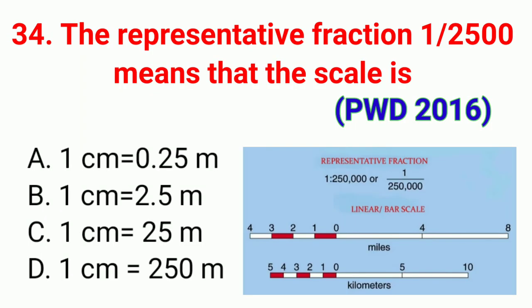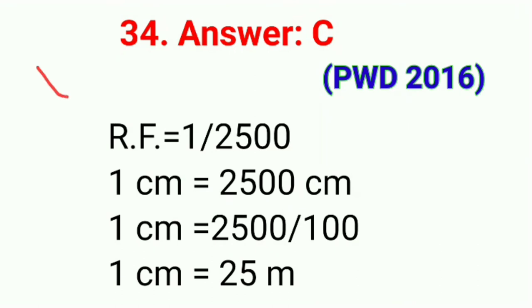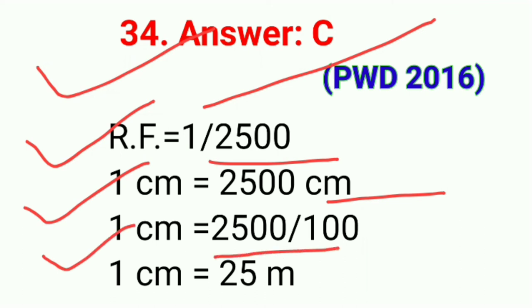Question number thirty-four: The representative fraction 1/2500 means the scale is. The correct answer is option C, 1 centimeter equals 25 meters. RF = 1/2500 means 1 cm = 2500 cm = 2500/100 = 25 meters.